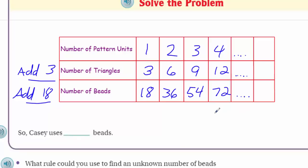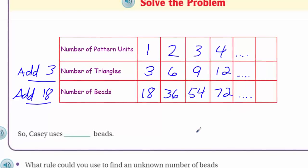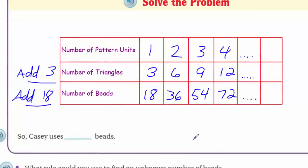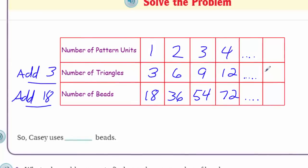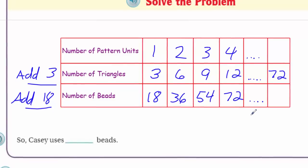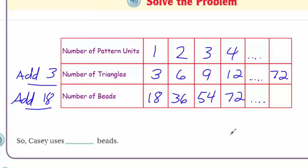But we are going to jump to, what we need to get here is we need to know the number of beads Casey uses, the number of beads, okay? Not the triangles, but the beads. So, looking at this, we know that his costume has 72 triangles. So, what we could do is we could put our 72 triangles right here. Do we know the number of pattern units? We don't. The problem doesn't give us that. It just gives us that he's going to have 72 triangles. But what we can do now here to find the number of beads he uses is we could multiply the number of triangles by six. Why would we want to do that? Well, look at the relationship with three and 18. See how this is times six?